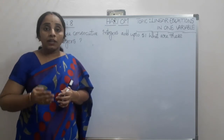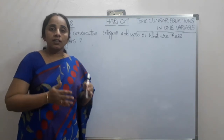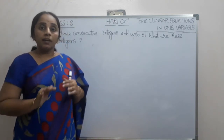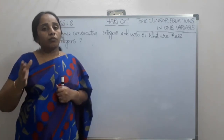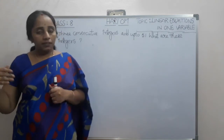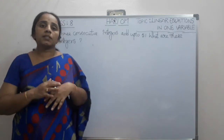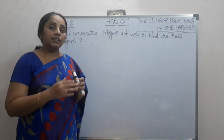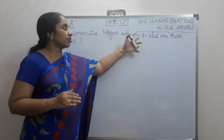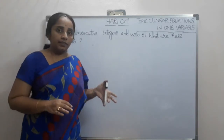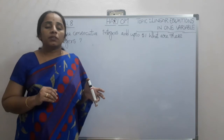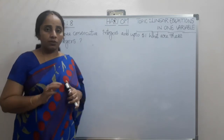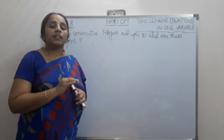What is meant by three consecutive? Consecutive means numbers which are coming in an order — either in ascending or descending, either positive or negative numbers. Three consecutive integers means 1, 2, 3 or 3, 4, 5, and similarly for negative numbers. The condition given is that by adding those three numbers we get 51. From this data, we are going to frame a linear equation.